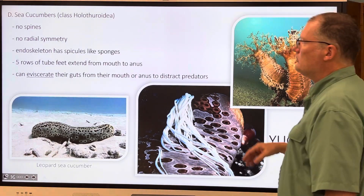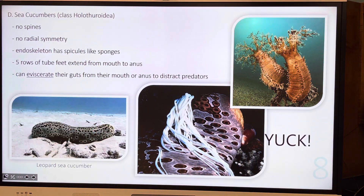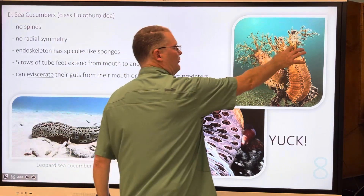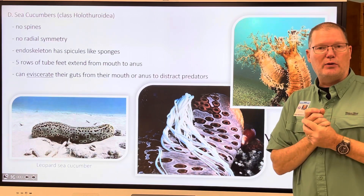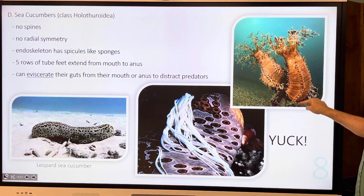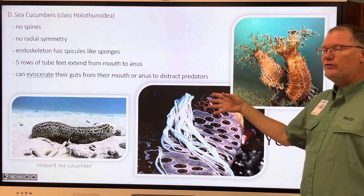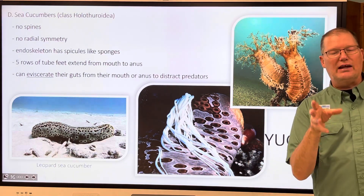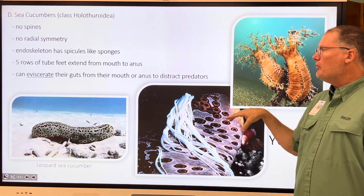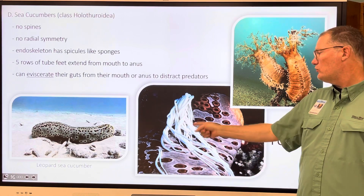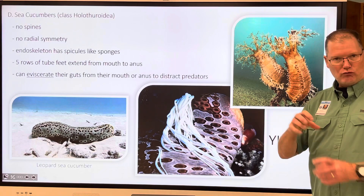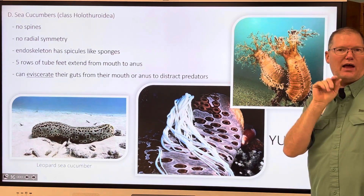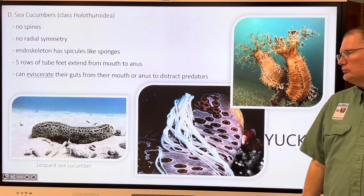Sea cucumbers are a different class. They don't have any spines, even though they're still considered echinoderms. They have no radial symmetry. Their endoskeleton has spicules, like sponges. They have five rows of tube feet that extend from mouth to anus. They can eviscerate — shoot out their guts from either their mouth or their anus to distract predators. A predator could bite off some of that material and swim off, and the sea cucumber will just regenerate those parts.